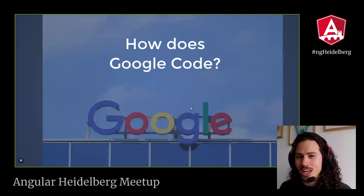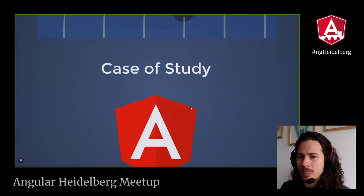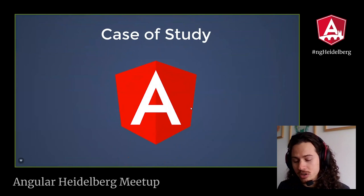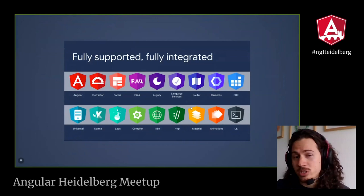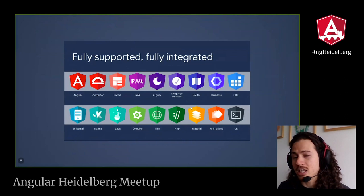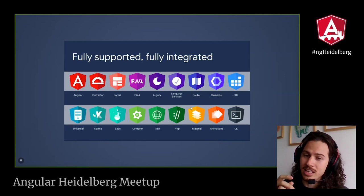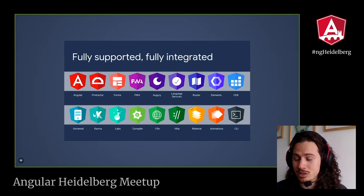So how does Google code? For this, we are going to pick an Angular product — Angular itself. We are going to analyze how Angular is being built. Angular has a lot of features: Protractor for end-to-end testing, forms to manage dynamic and complex forms, language services to manage internationalization, the Angular router to navigate from one page to another, Angular Universal for server-side rendering, HTTP, Angular Material, animations, CLI, and so on.